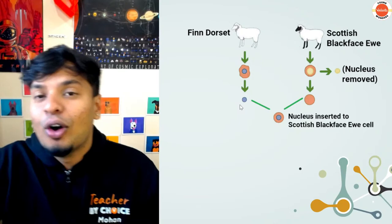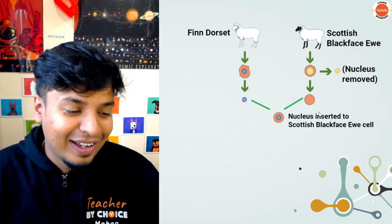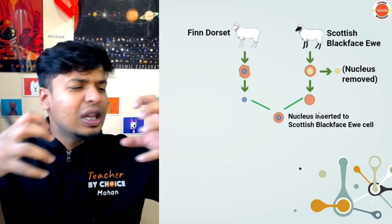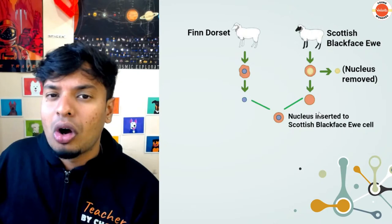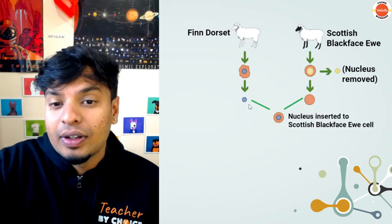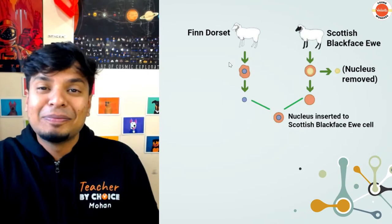Then they took the nucleus from the Fin Dorset cell and inserted it into the egg of the Scottish Black Face. Now, since all the genes of the Scottish Black Face were removed, the baby that would be born would have only the genes from this nucleus — which belongs to the Fin Dorset.